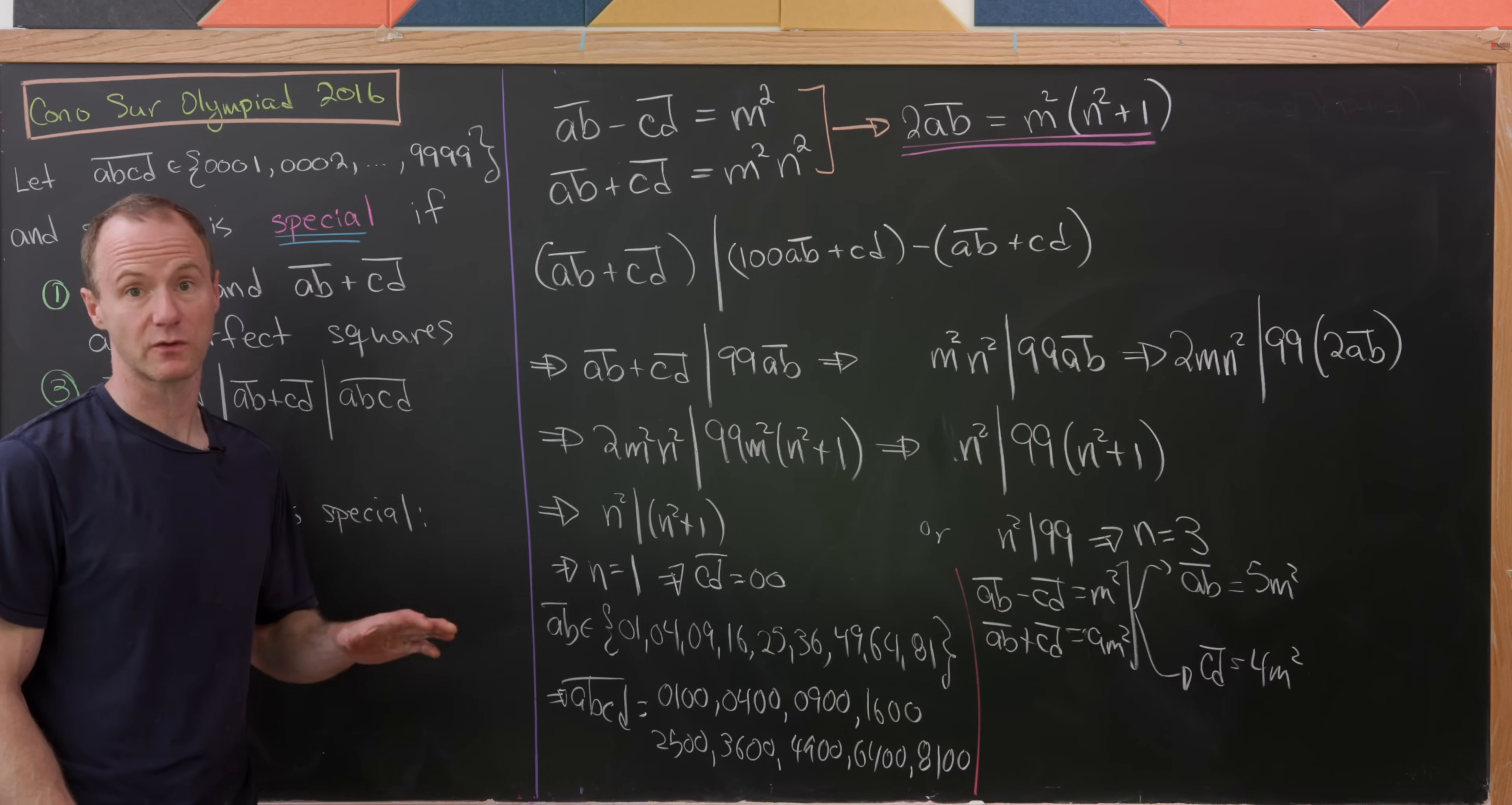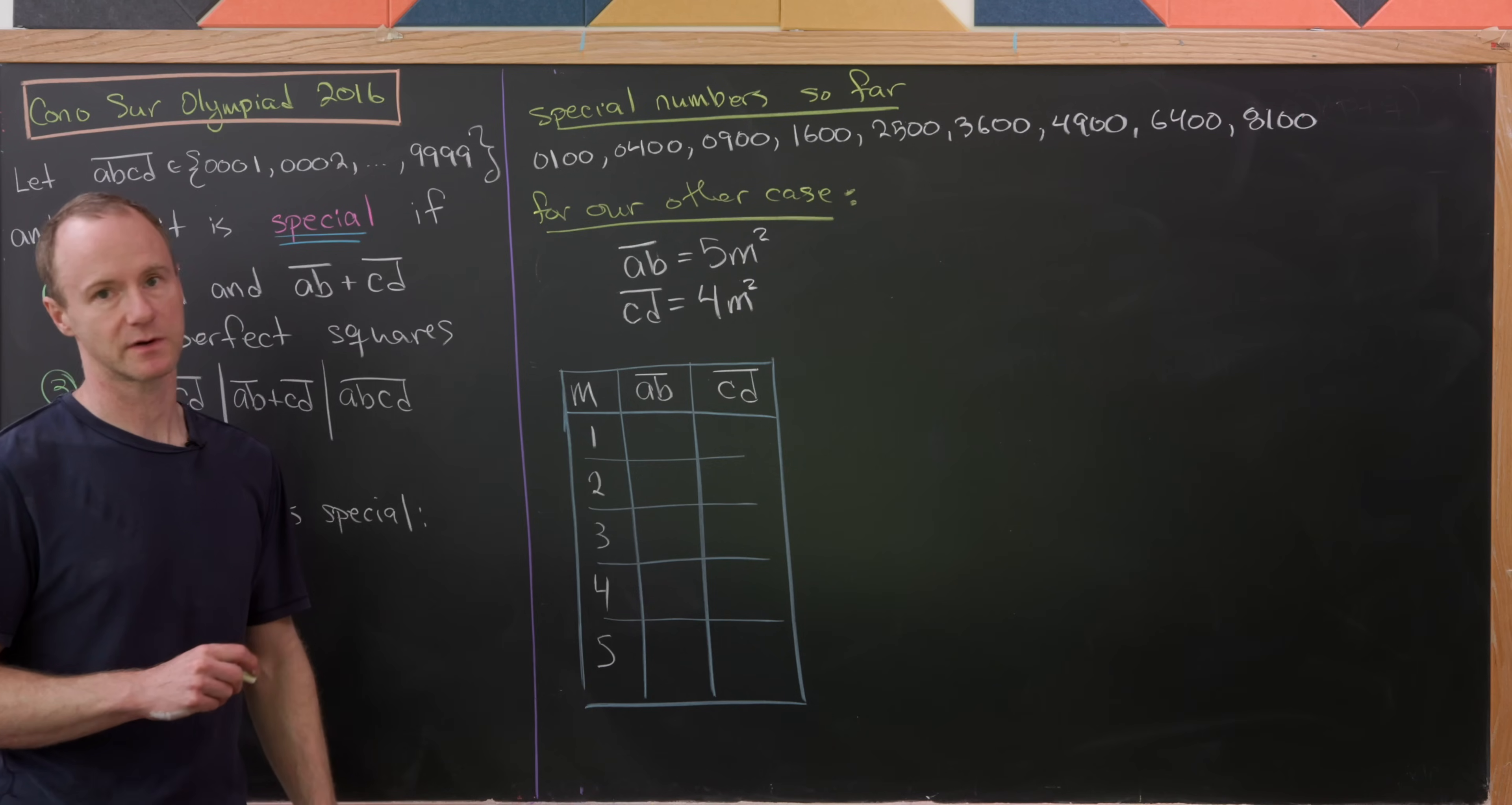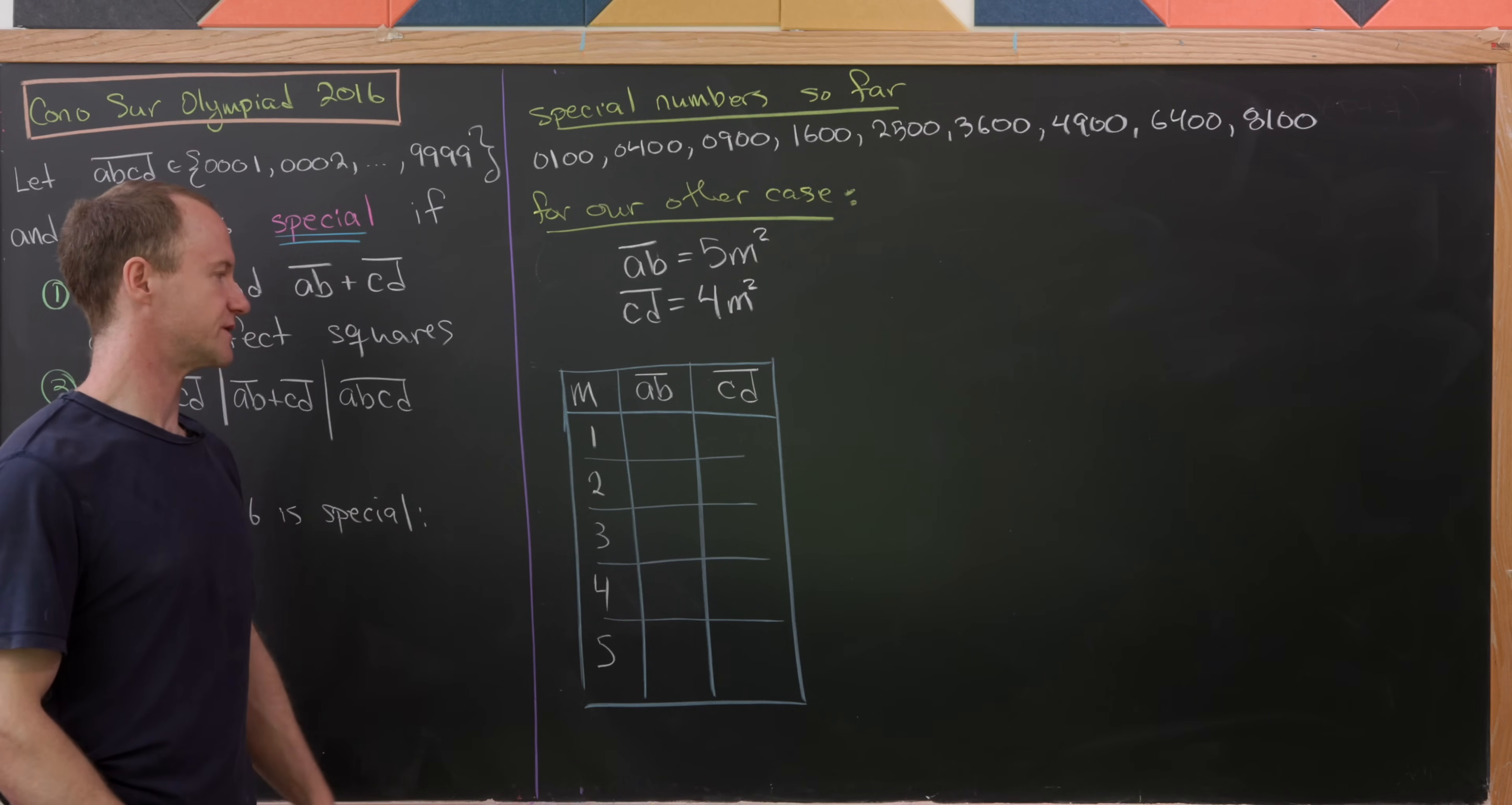We could add or subtract these two equations to solve for AB and CD. We get AB equals 5M squared and CD equals 4M squared. So far we've determined nine special numbers. The second case has AB equal to 5M squared and CD equal to 4M squared, where M is some natural number. If M equals 0, you get 0000, which satisfies the two conditions but doesn't come from the given set.